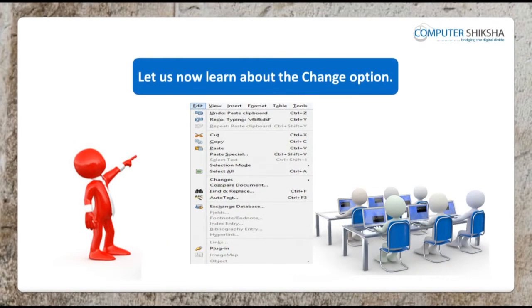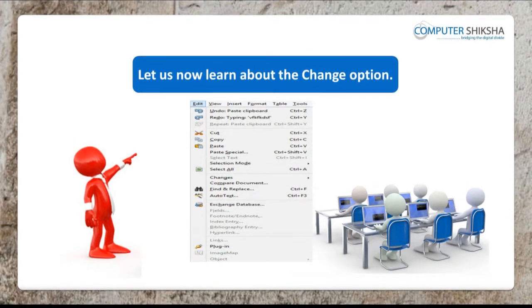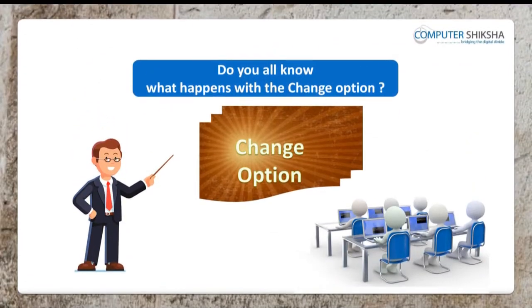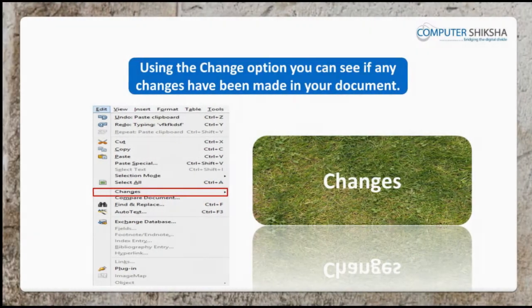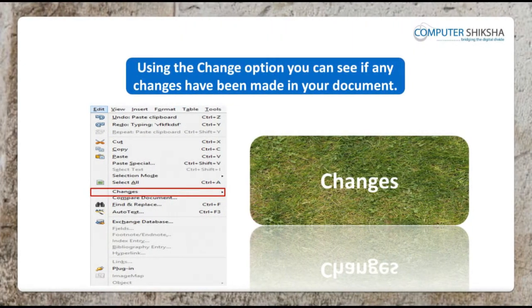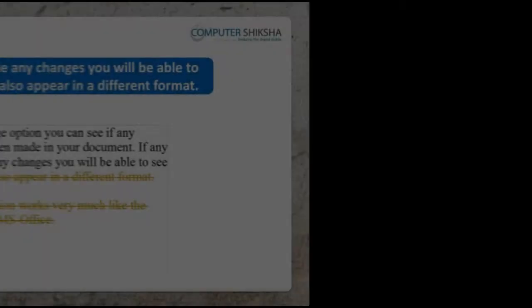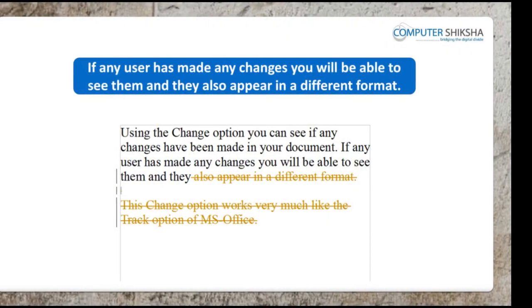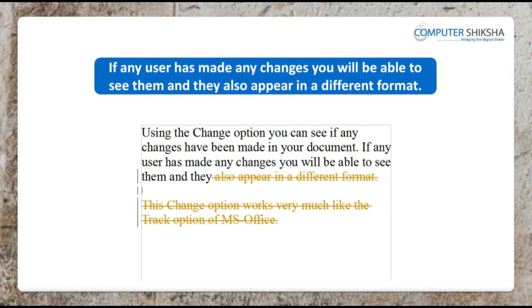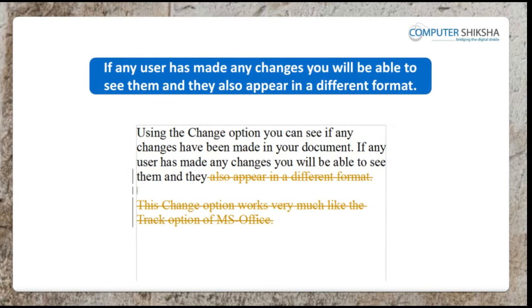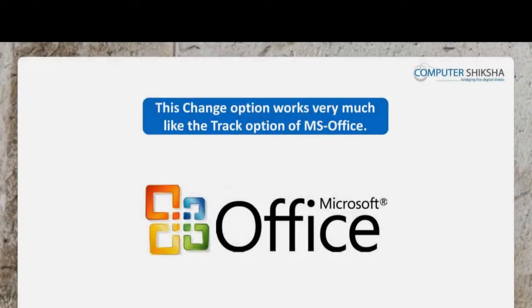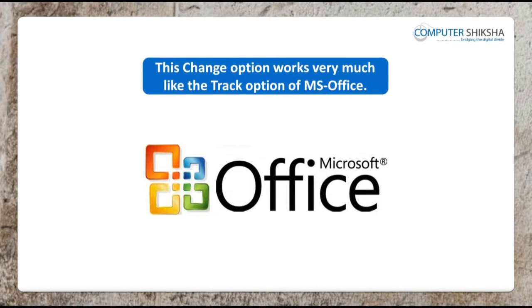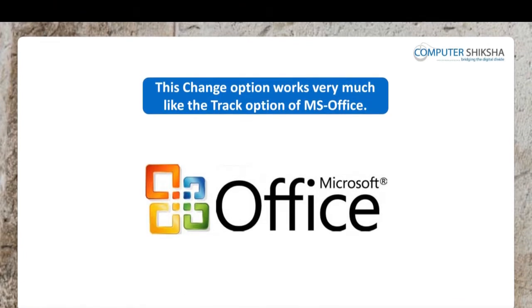Let us now learn about the change option. Using the change option you can see if any changes have been made in your document. If any user has made changes you will be able to see them and they will appear in a different format. This change option works very much like the track changes option of MS Office.